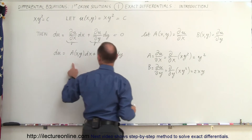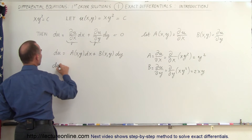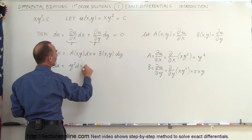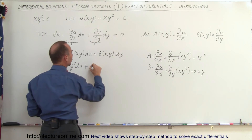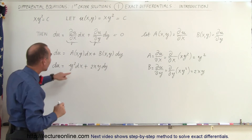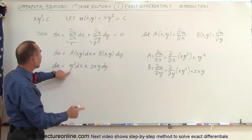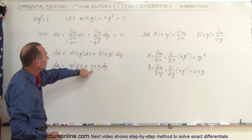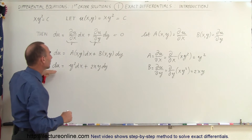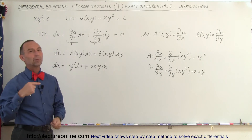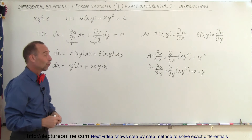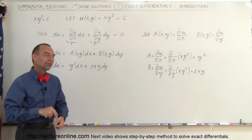This means that du becomes: du equals y squared times dx plus 2xy times dy. Now, if we take the partial of y squared with respect to y, and we take the partial of 2xy with respect to x, and they're equal to each other, then we know this is an exact differential. We can then use the method of exact differentials to solve the differential equation.